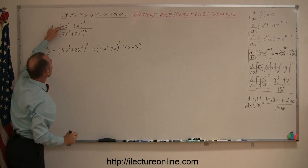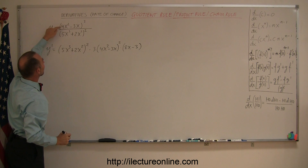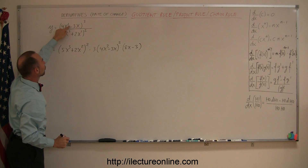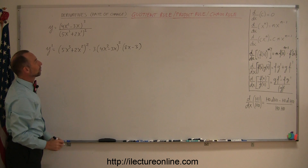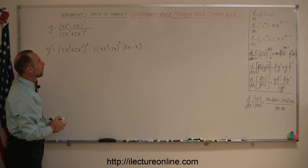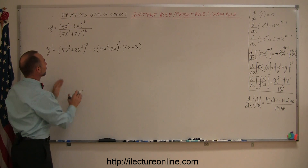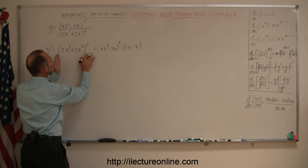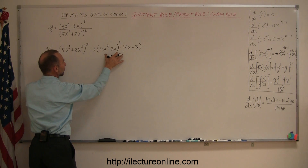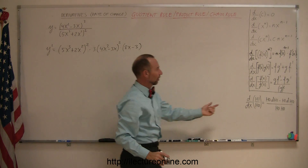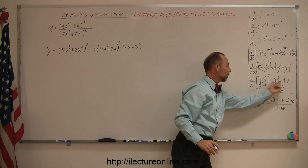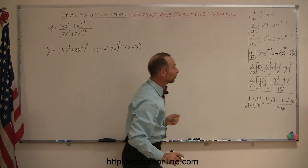Remember, when we take the derivative, it's the exponent times the constant — 8x to the 2 minus 1 — and of course the derivative of 3x is simply 3. So now we have the denominator times the derivative of the numerator; that's this part of the derivative.